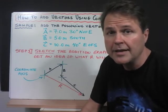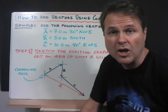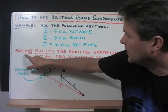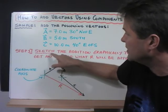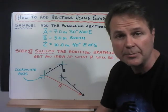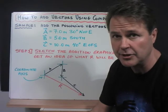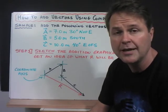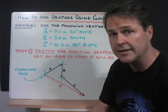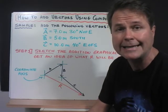So a better method is to use our understanding of trigonometry. The very first step you should do is sketch the addition graphically to get an idea of what R will be approximately. So you still have to understand the graphical method of addition just to jump start the component method of addition. The component method, by the way, is also known as the analytical method.